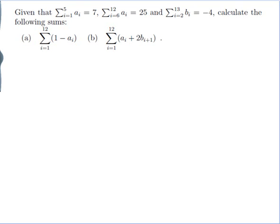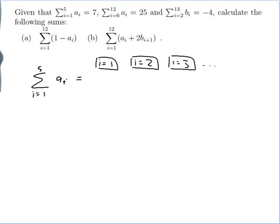First, let's understand what each of the sums we've been given actually mean. The sum from i equals 1 to 5 of ai means I run through the possible values of i and put them into the formula. So i equals 1, i equals 2, i equals 3, and so on, up to i equals 5.